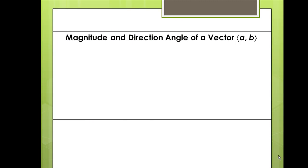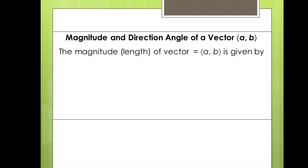We'll find the magnitude and direction angle of a vector using the TI-83 graphing calculator. To find the magnitude or the length of a vector (a, b), we will use a function in the graphing calculator. We input rectangular x, y coordinates and the calculator returns the magnitude or the length of our vector.